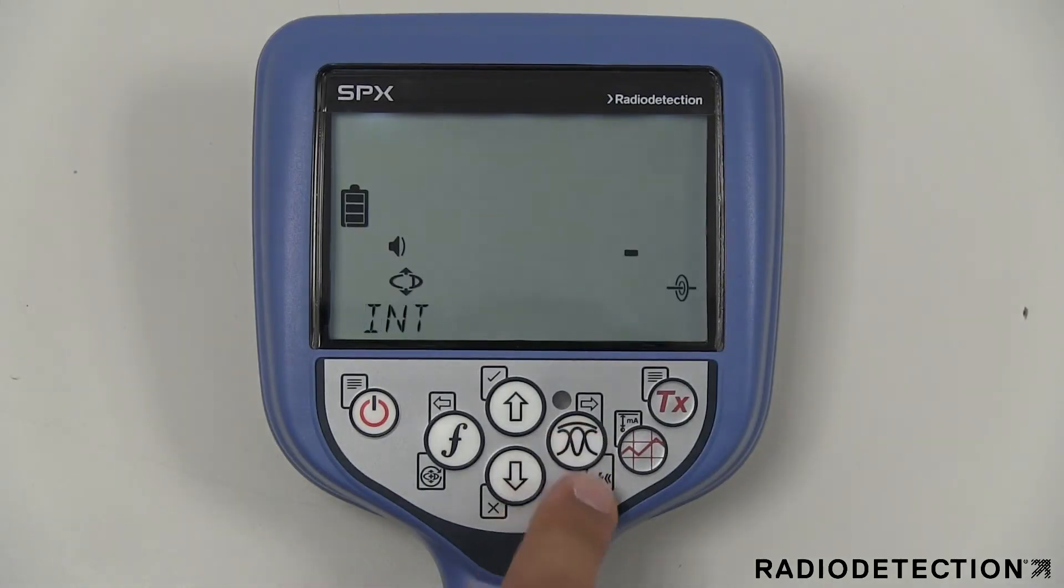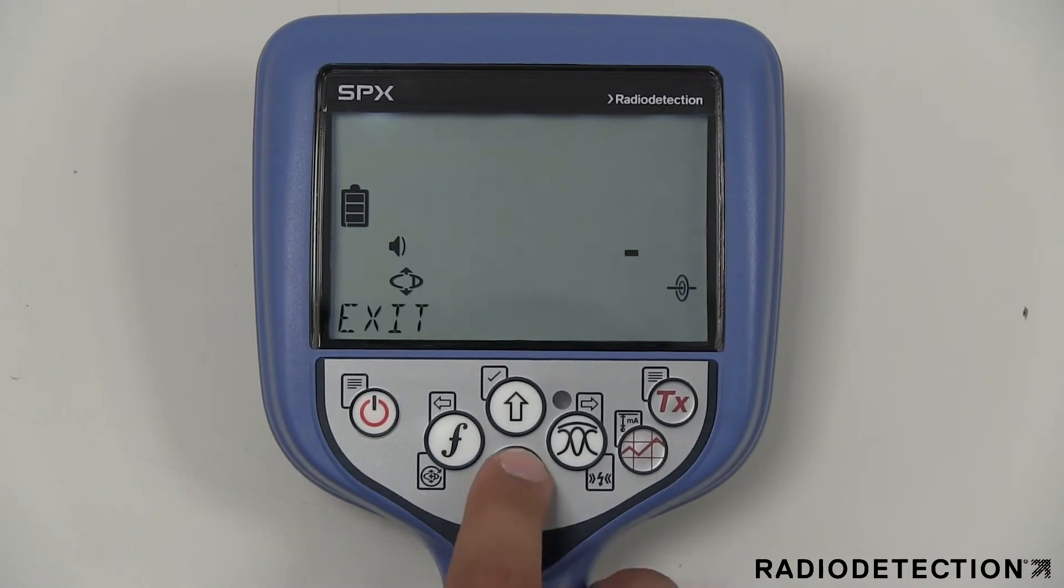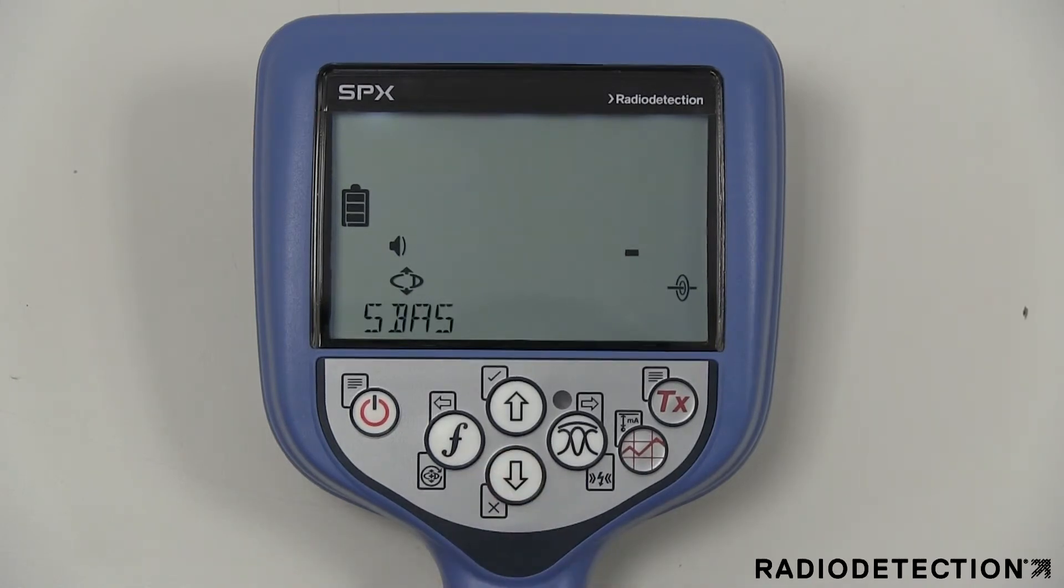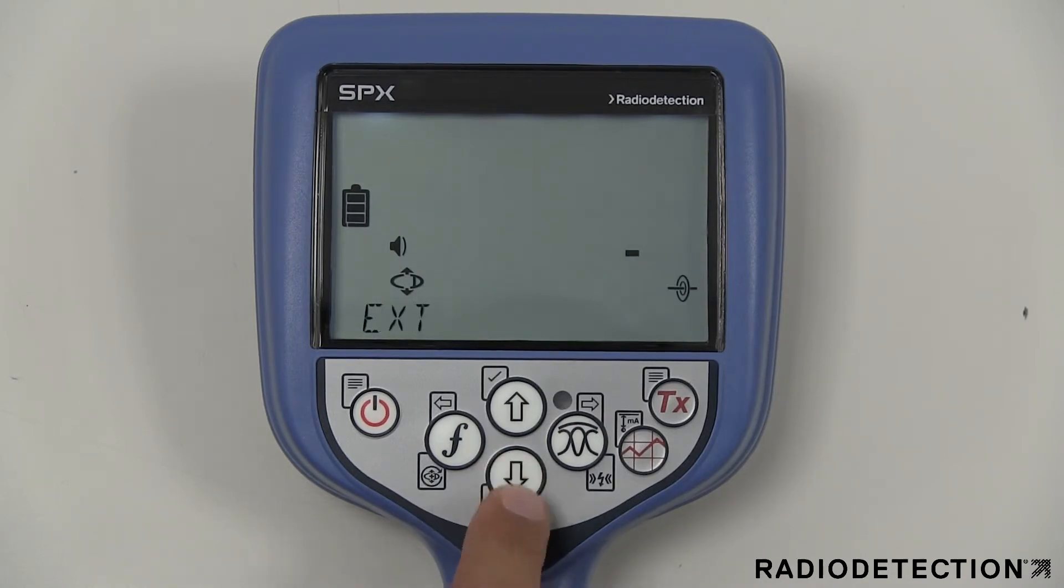The GPS menu is only found on GPS locator models and allows you to enable and disable the internal GPS module. The SBAS augmentation option improves the internal GPS accuracy. You can also select to use an external GPS source.